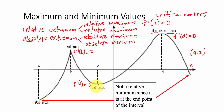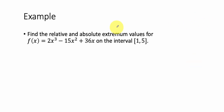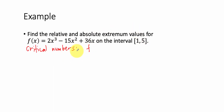But since it is the lowest point, it is called Absolute Minimum. To summarize the graph: Relative Maximum, Relative Minimum, Absolute Maximum, Relative Maximum, and nothing for the end point. Now for the example: Find the relative and absolute extremum values for f(x) = 2x³ − 15x² + 36x on the interval [1, 5]. First, we find the critical numbers, so f'(x) = 6x² − 30x + 36.